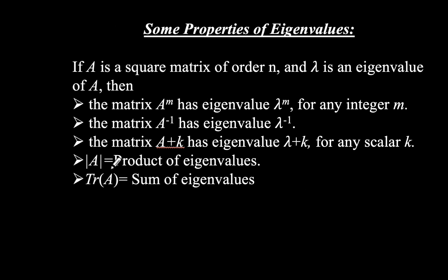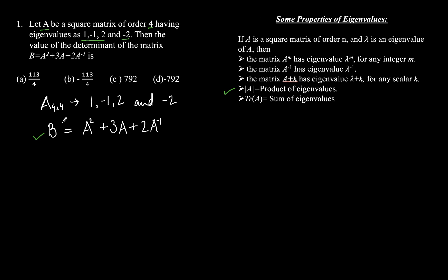The next properties are: the determinant of a matrix equals the product of its eigenvalues, and the trace of matrix A equals the sum of its eigenvalues. Since the matrix and its eigenvalues are given, we will use these properties to calculate the determinant of matrix B — but first we need the eigenvalues of B.